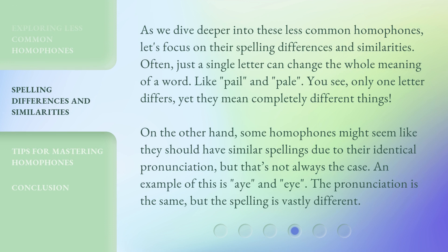As we dive deeper into these less common homophones, let's focus on their spelling differences and similarities. Often, just a single letter can change the whole meaning of a word. Like pale and pale — you see, only one letter differs, yet they mean completely different things. On the other hand, some homophones might seem like they should have similar spellings due to their identical pronunciation, but that's not always the case. An example of this is I and I — the pronunciation is the same, but the spelling is vastly different.